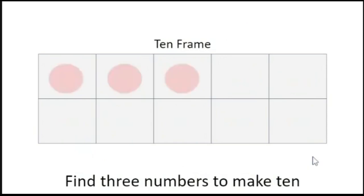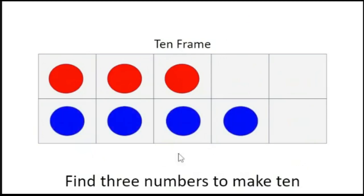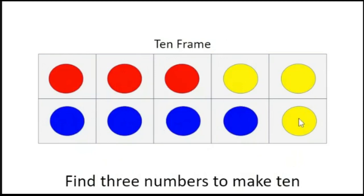Now let's find three numbers to make ten. This is our first number: one, two, three. Good. Let's find our second number: one, two, three, four. And our third number: one, two, three. Good job. So we have three numbers — three, four, and three. That makes ten. Good job.